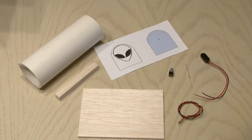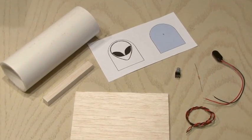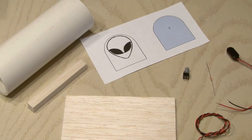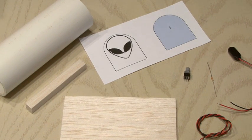All you'll need is a piece of PVC pipe, some balsa wood, a switch, a resistor, a 9-volt battery clip, some wire, along with the alien template.